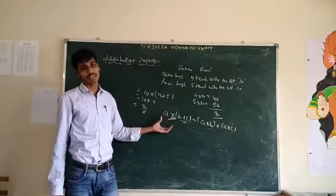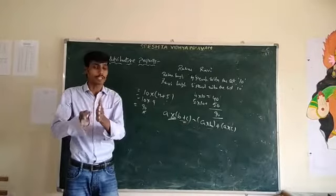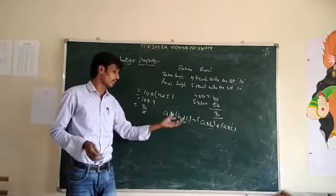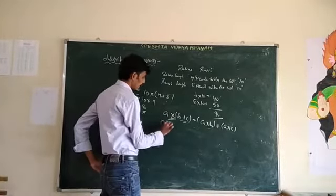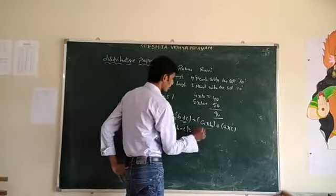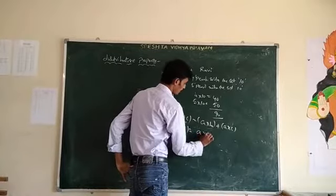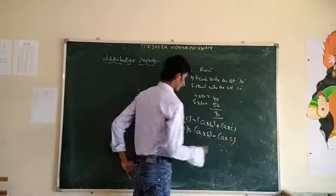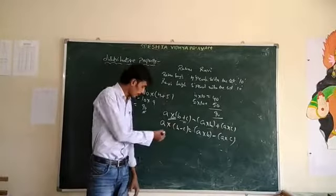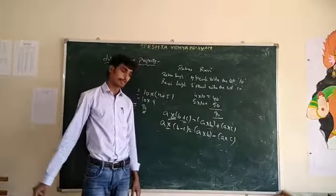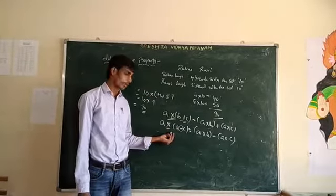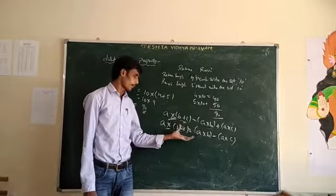The distributive property has two forms: A into (B plus C) equals A into B plus A into C, and also A into (B minus C) equals A into B minus A into C. The second is called the distributive property under multiplication over subtraction.